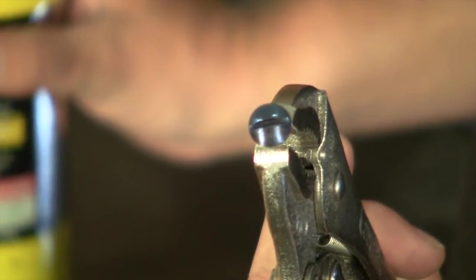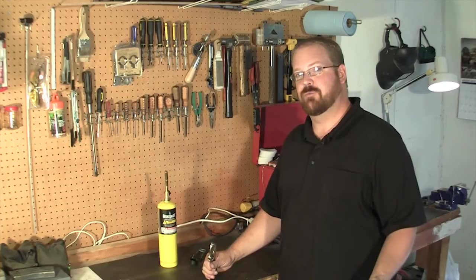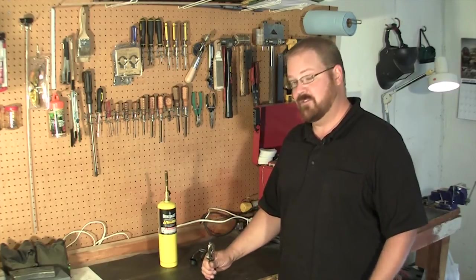And now we have a nitered blue screw. So even though you don't have niter bluing salts, you still can niter blue. That's this week's tip.